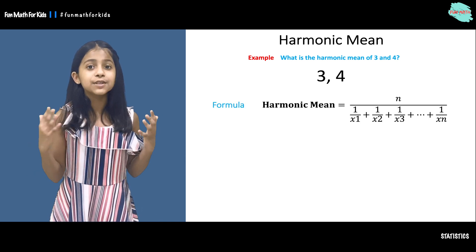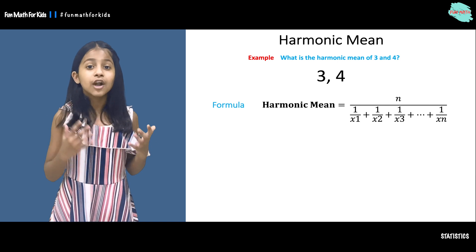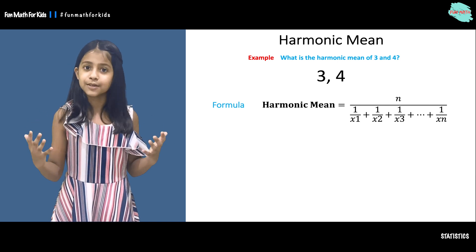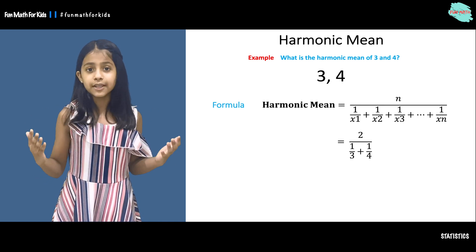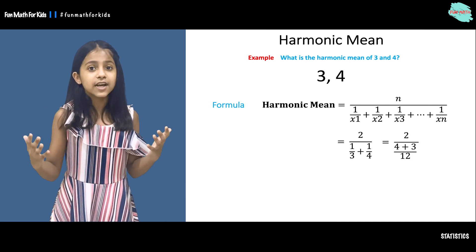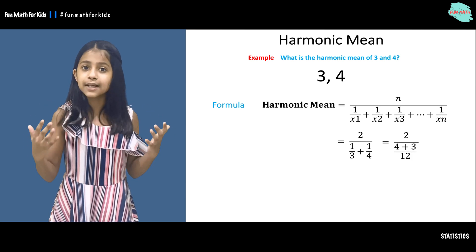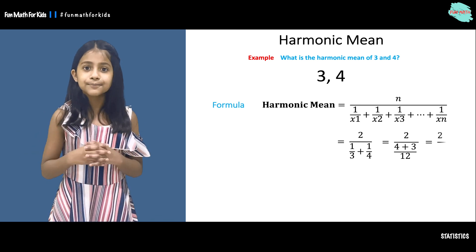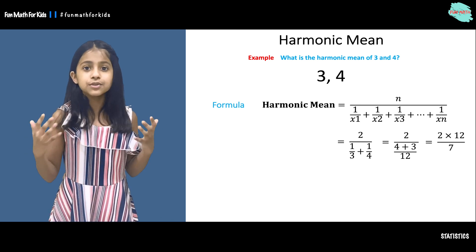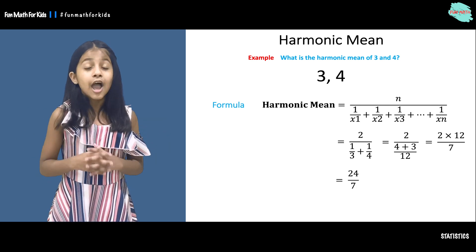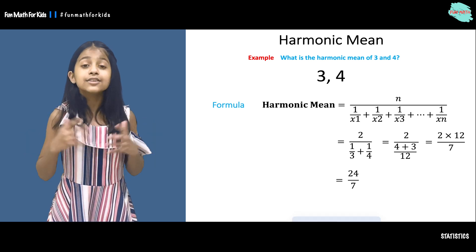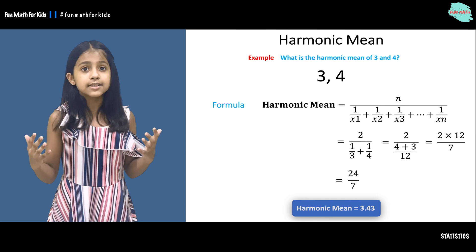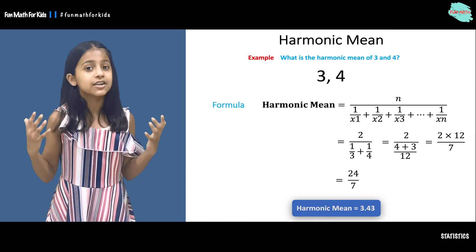So what is the harmonic mean of three and four? We are going to use the formula n over the sum of the reciprocals of all the numbers. Here n is two, so we have two over (one over three plus one over four). Simplifying, we get two over (four plus three over twelve), which gives us two times twelve over seven. Simplifying further, we get 3.43 as our harmonic mean.